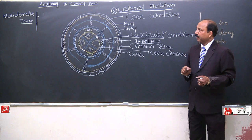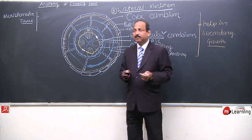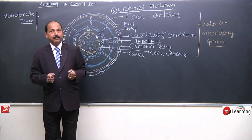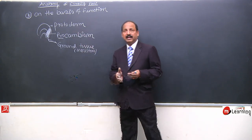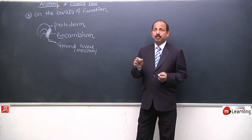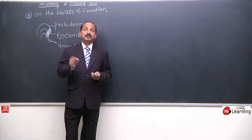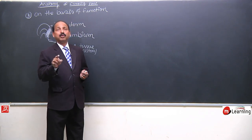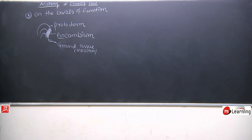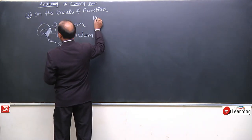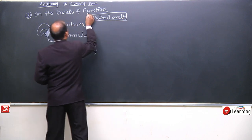We are discussing the third topic — on the basis of function. The work and function of meristematic tissue — this is the third and last classification. So far we have studied meristem on the basis of origin and on the basis of position. The remaining topic is on the basis of function — which meristematic tissue is performing which function.